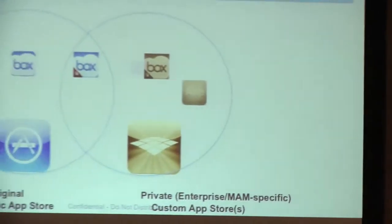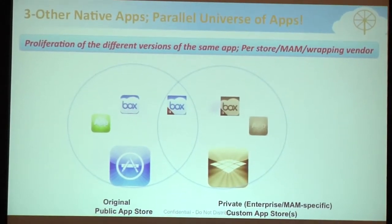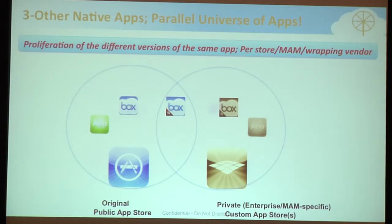This is more true with iOS 7, where Apple has invested more resources enhancing the native mail experience with smart folders. What's happening with other native apps: in the app store you have a Box application, but for enterprise use you have a Box Good Edition — Box rewritten with Good Technologies SDK. Essentially, we are creating a parallel universe of applications because native applications cannot be managed for enterprise use.